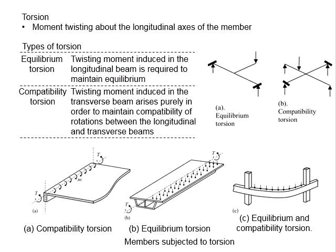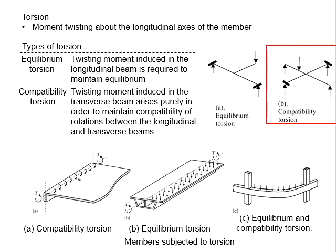Compatibility torsions refers to the twisting moment induced in a transverse beam, arising purely in order to maintain the compatibility of rotations between the longitudinal and transverse beams. The key difference is that equilibrium torsions are fully reliant on torsional resistance, whereas with compatibility torsions, even with unsymmetrical loads along the length resulting in a differential rotational moment, there are still other secondary mechanisms to help resist the torsion.